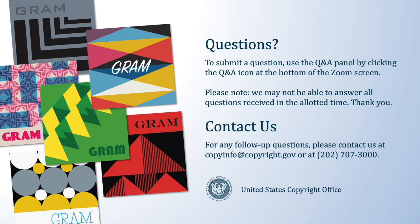Question: Is the limit for the group registration of unpublished works — for sound recordings or musical works — still 10 songs per application, and is there any chance this will change to reflect the same 20-work limit for GRAM? That is correct — the group registration of unpublished works option has different requirements, one of which is that you may register up to 10 unpublished works that meet certain requirements. This is a different application with different requirements and a different number of permitted works than the GRAM registration, which allows two to 20 musical works or sound recordings. There are no current plans to change the group unpublished registration requirements as a result of GRAM.